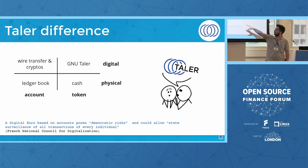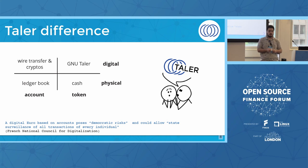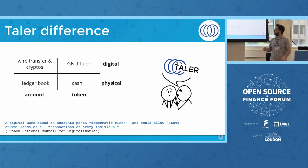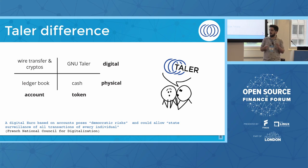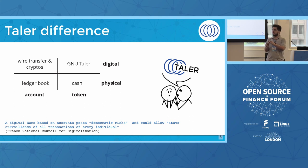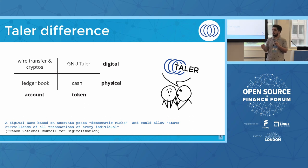With cash, you have something that you give to someone else to cancel a transaction. Moving this into the digital world using tokens, you have the problem of double spending. Thaler addresses this issue using a centralized exchange and tokens that guarantee the customer is not being traced by the exchange. The exchange cannot correlate the withdrawal with the deposit — whenever it gets a deposit, it doesn't know who the money is from. So the user gets private payments without loss of trustability.